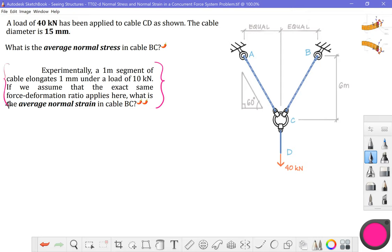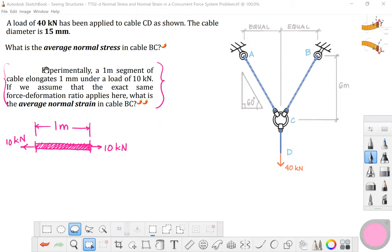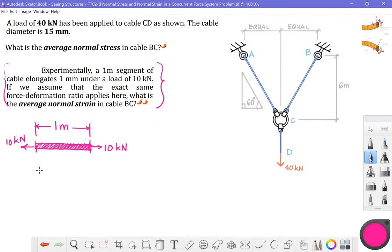And what this says is that experimentally, a one-meter segment of cable, assuming it's a braided cable of some sort, not really given, but we've got some type of cable, a one-meter specimen, and we have placed a tensile force of 10 kilonewtons on the cable, and the result of those 10 kilonewtons of force is a deformation of one millimeter.